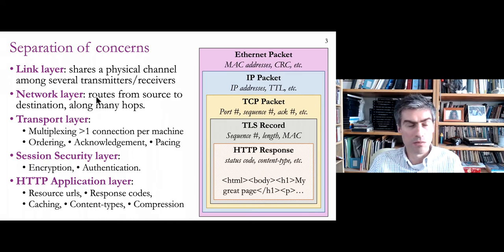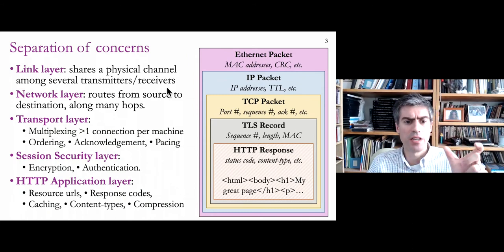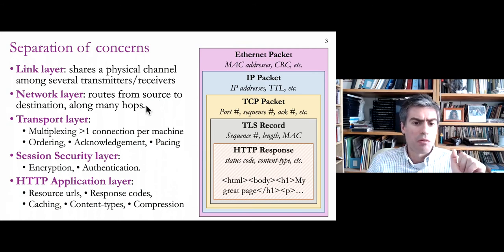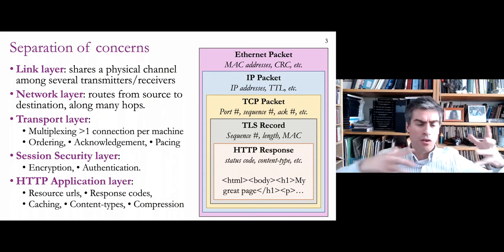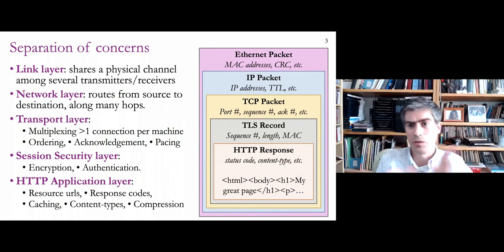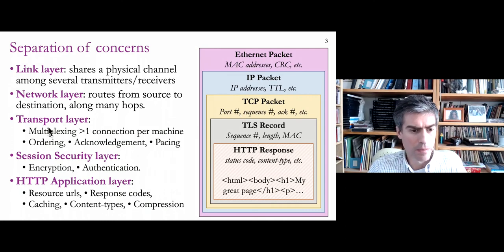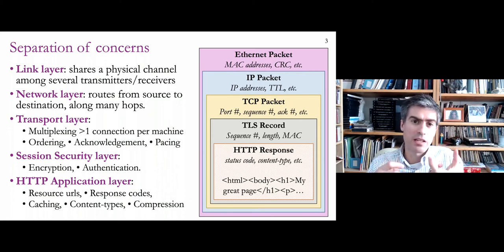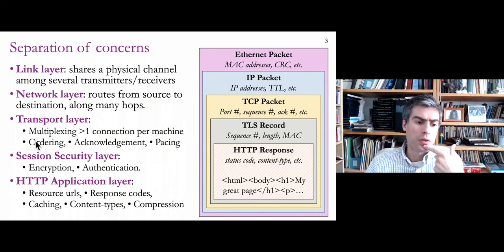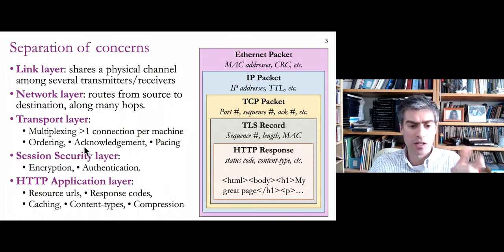At the lowest level we have link layer concerns — how to share a physical channel with many transmitters and receivers that are competing. At the network layer, we figure out how to get packets from a source to a destination across a network with many different paths, finding shortest paths for good performance. At the transport layer, we handle breaking data into finite-size packets and dealing with the reordering that can occur when packets are sent independently.